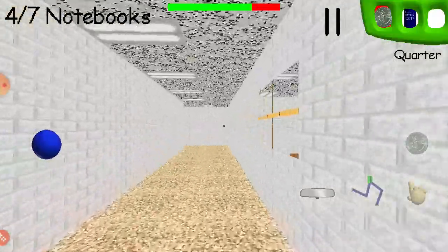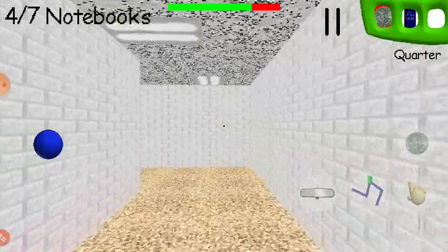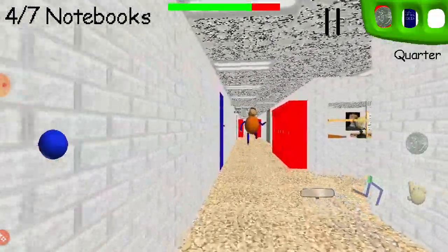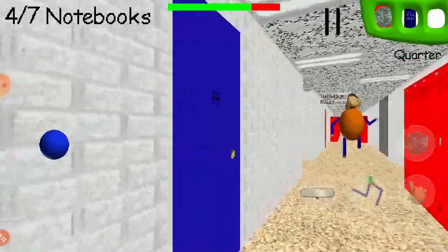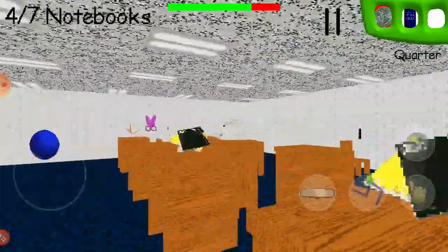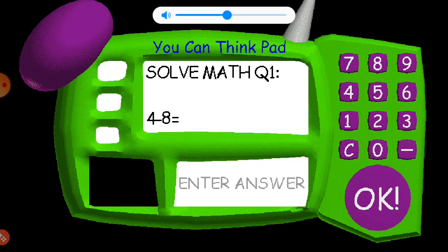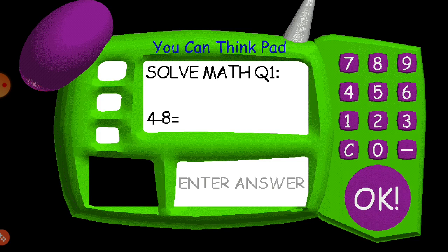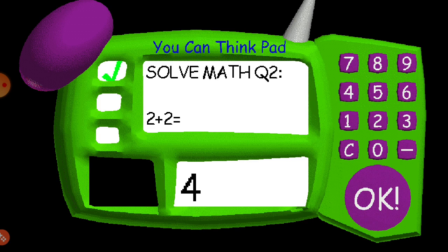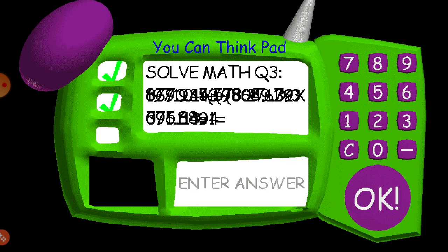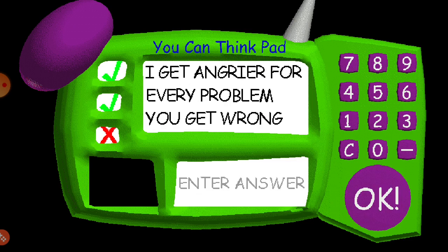Come on. Four minus eight negative four. Two plus two it goes four. Let me just... one thousand. Get every problem you get wrong.